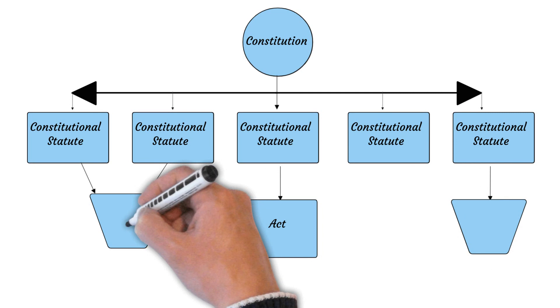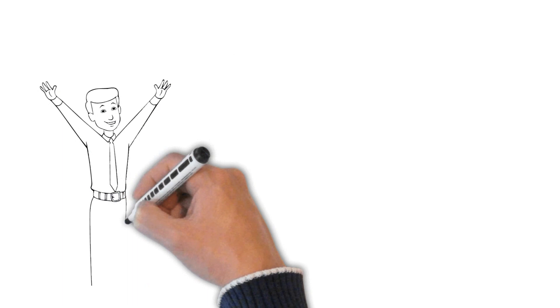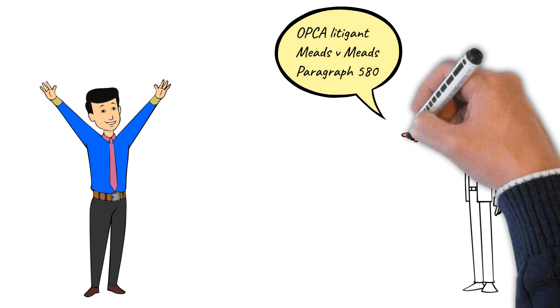Imagine the surprise that near the beginning of the proceeding, the prosecutor began citing paragraphs of Meads v. Meads against the litigant, starting with paragraph 580.